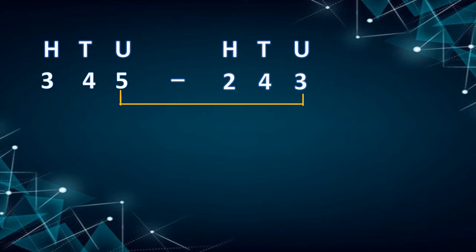First, we have to start subtracting from units place — units place number with units place number. Here, 5 is in units place and 3 is in units place. So we subtract 5 minus 3, and we get 2.